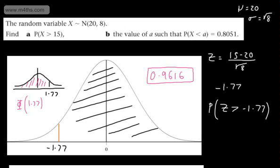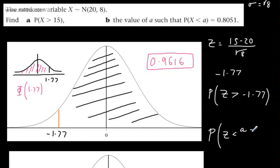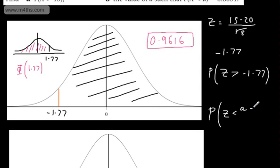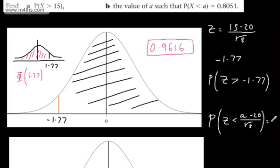Now we want to find the value of A given an area. We rewrite this as the probability of z less than (A minus 20) divided by root 8, and this is given to be 0.8051. So we need to find the z-value corresponding to a cumulative area of 0.8051.